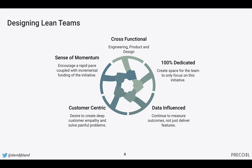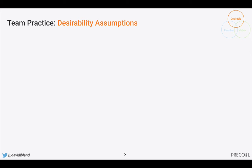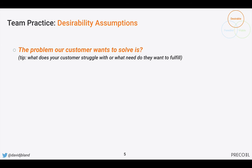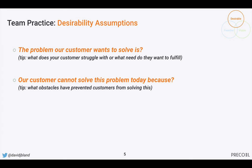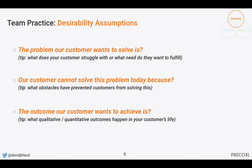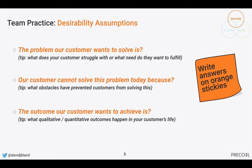They're moving along quickly, uncovering risky assumptions so that we can deliver the right thing. Now let's start unpacking some of these desirability assumptions. The problem our customer wants to solve is — what does your customer struggle with, what need do they want to fulfill? Our customer cannot solve this problem today because — what obstacles prevent customers from solving this? The outcome our customer wants to achieve is — what are the qualitative and quantitative outcomes in a customer's life? Write these answers on orange stickies.